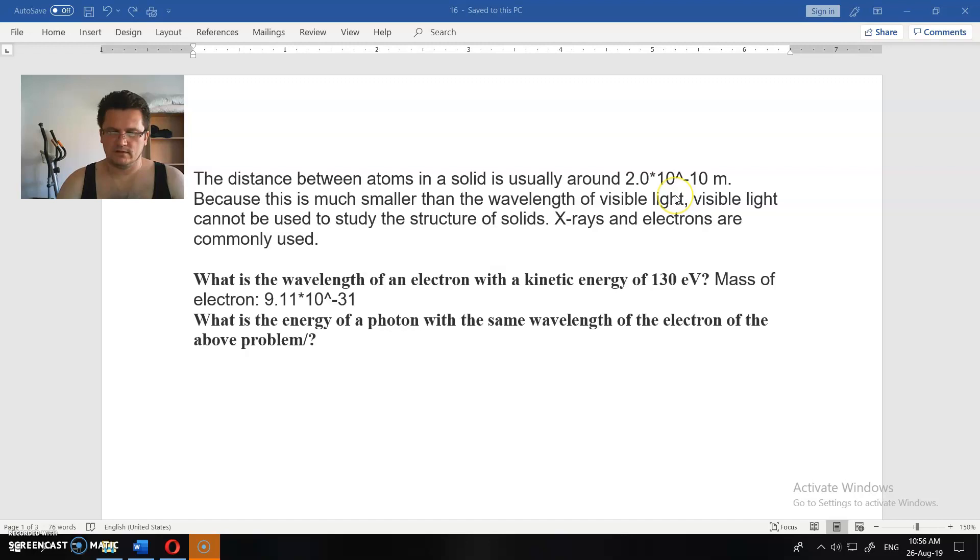The distance between atoms in a solid is usually around 2×10⁻¹⁰ meters. Because this is much smaller than the wavelength of visible light, visible light cannot be used to study the structure of solids.